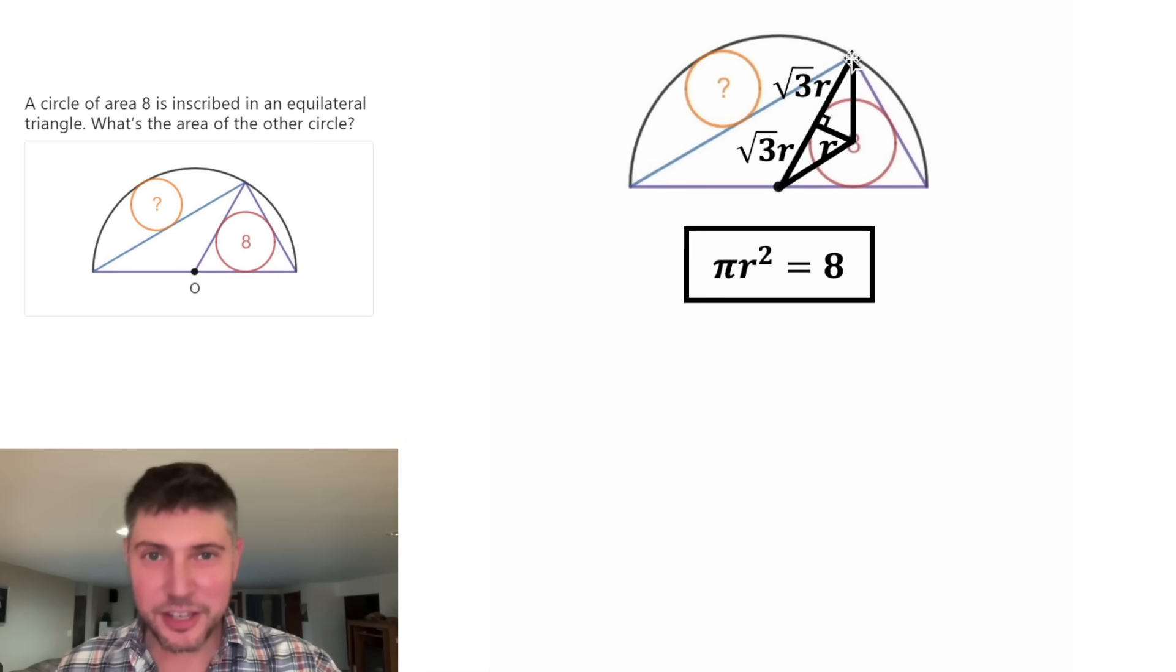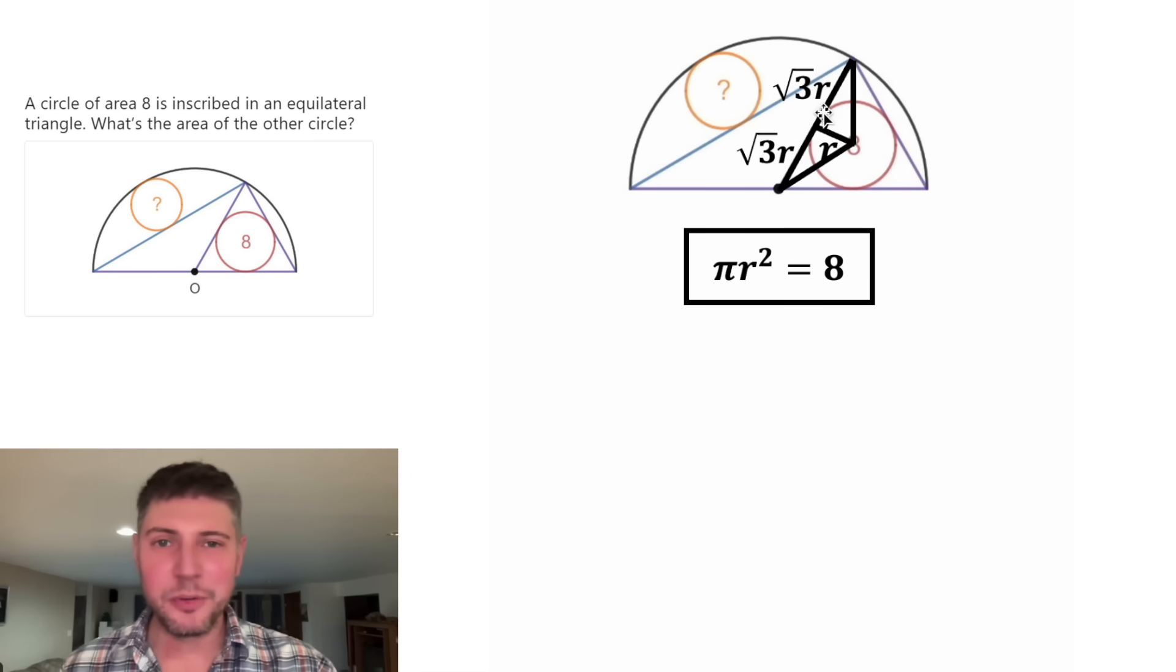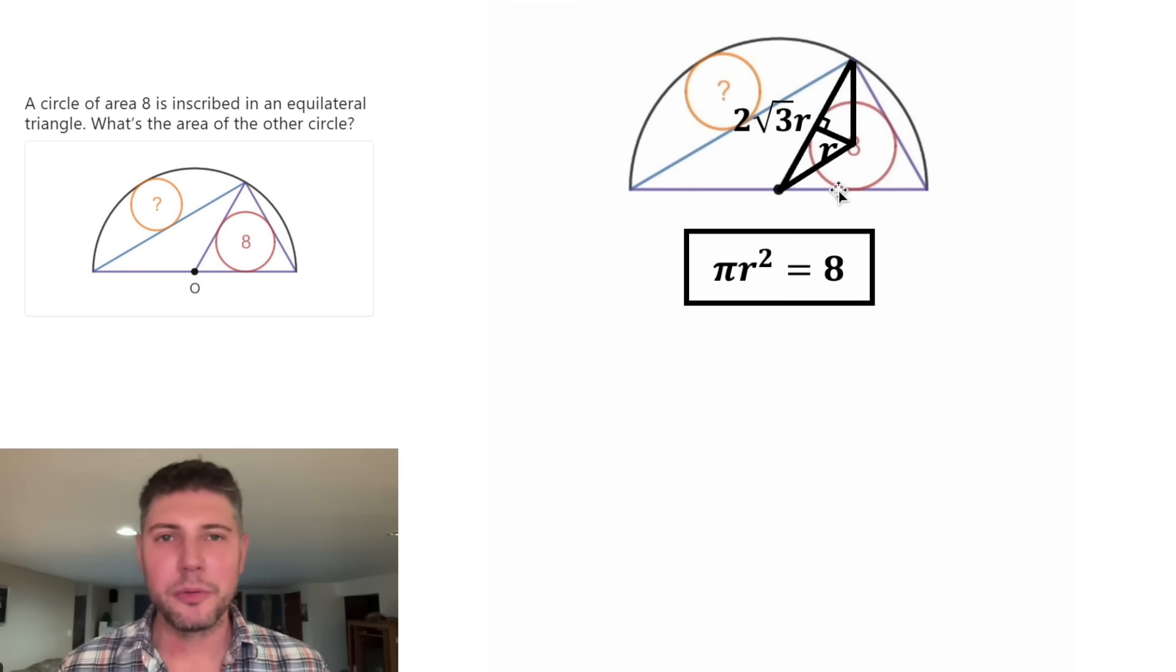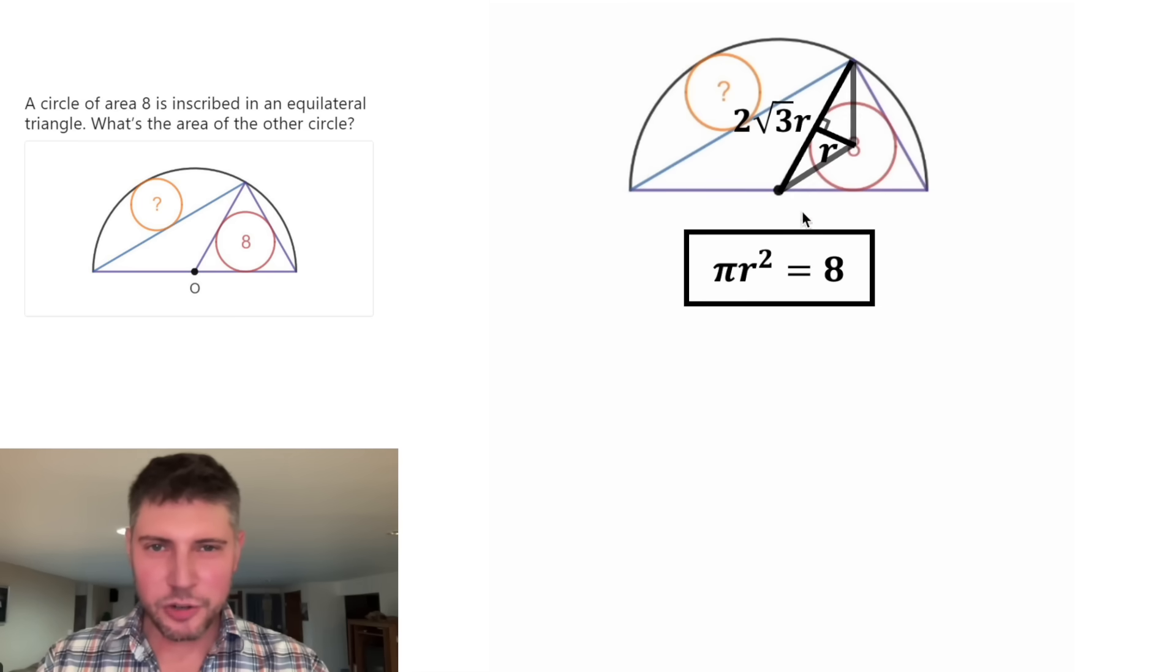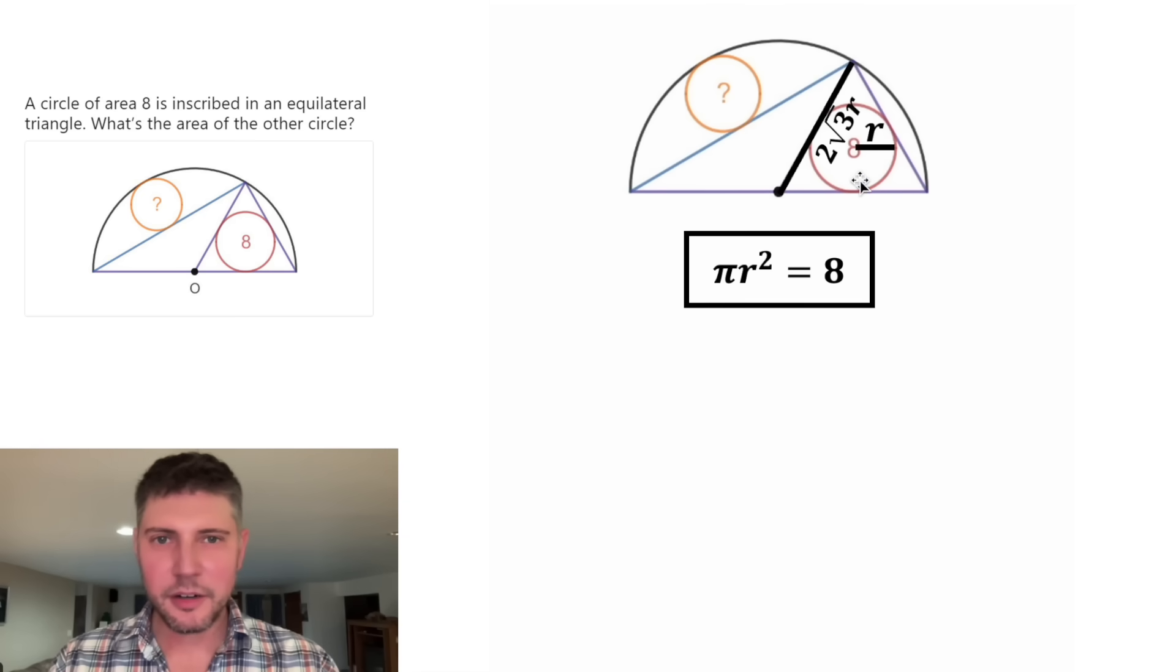And this entire thing is a radius of the semicircle. So the radius of the semicircle will be √3r plus √3r, in other words, 2√3r. And I don't think we need these triangles anymore. Let's move the radius over here. Let's move this label over here.